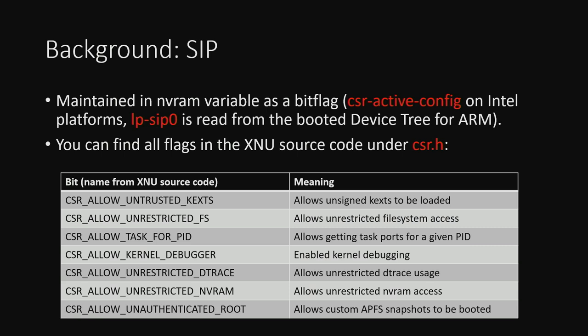SIP has a certain domino effect. What I mean is that if you have an NVRAM variable override — a way to bypass the NVRAM variable write protection by SIP — you can bypass SIP entirely by overwriting the bit flag in CSR Active Config. Similarly, if you can load an untrusted kernel extension, you can write a rootkit and also bypass SIP. Any part of SIP you can bypass actually topples the entire domino. Generally, if you were able to bypass one mitigation, you were able to bypass all of them in theory.